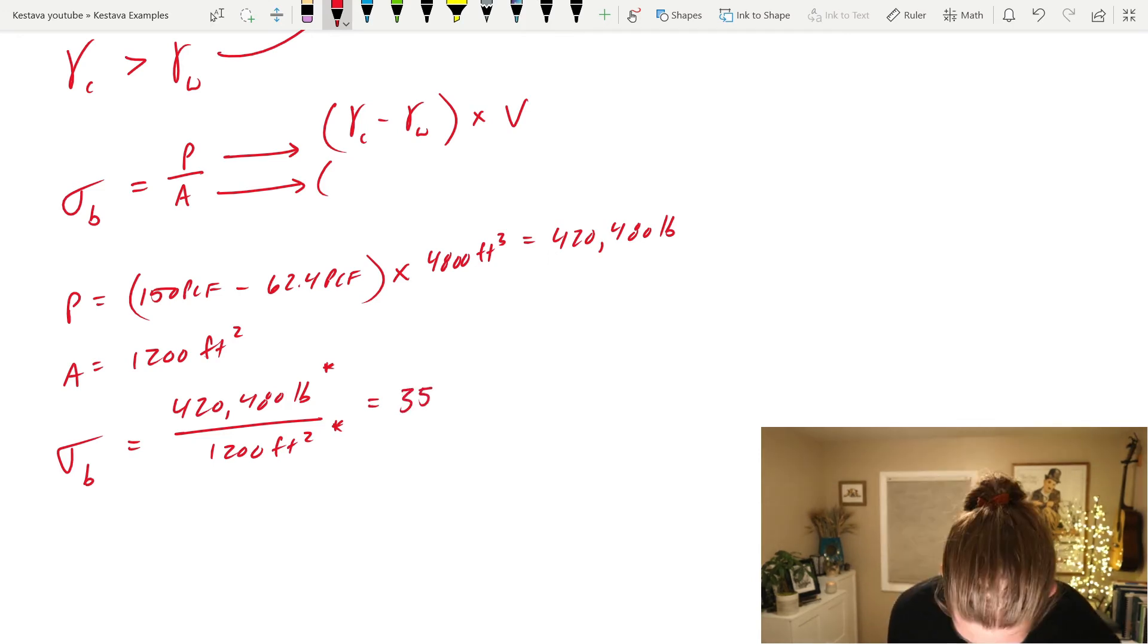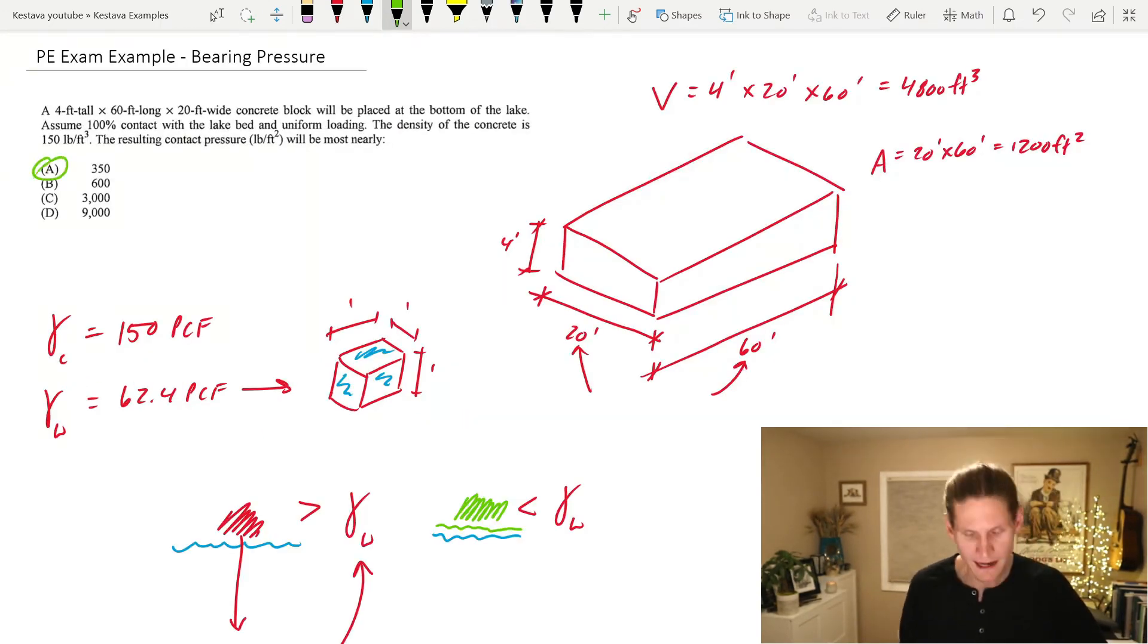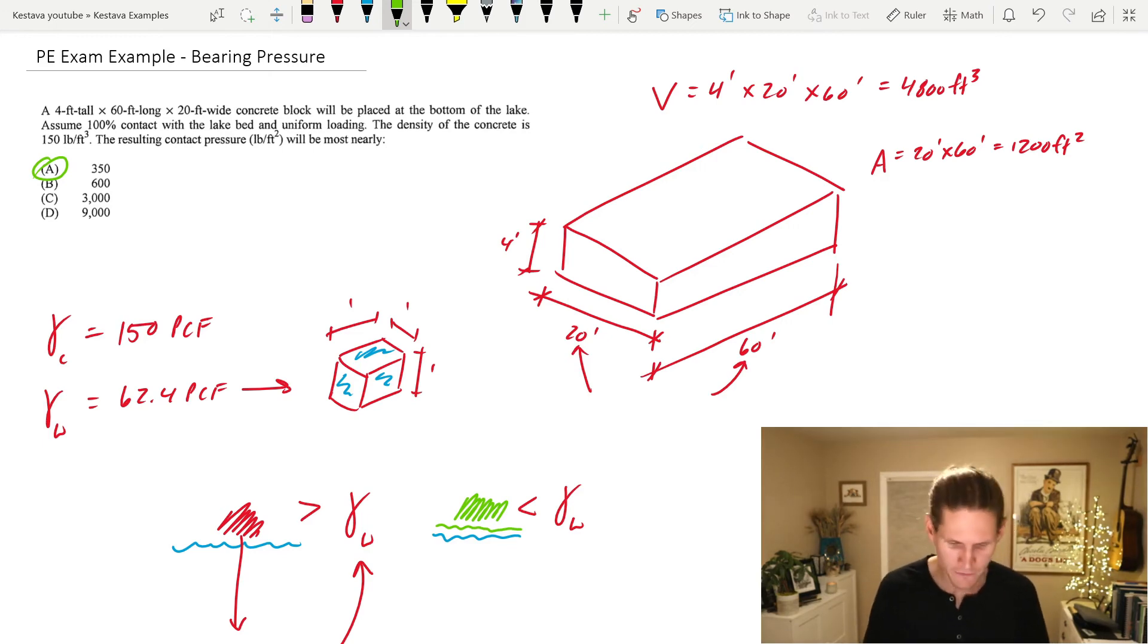For a final answer of 350 pounds per square foot. And I would say for this problem, our answer is going to be A, 350 PSF.